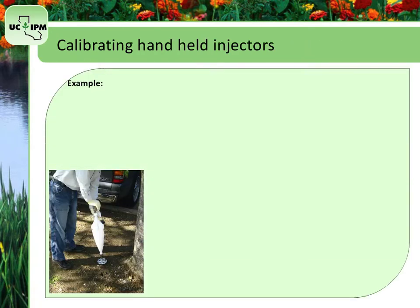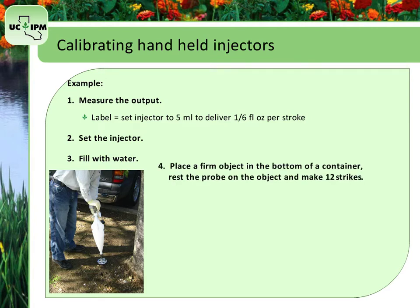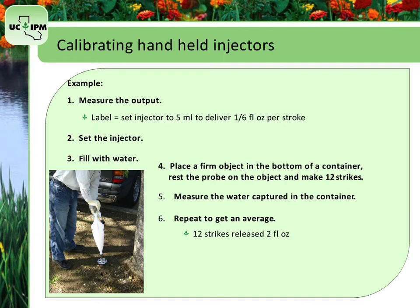To calibrate handheld soil injectors, first measure the output. If the product label says to set the injector to 5 milliliters, the injector delivers 1/6 fluid ounce of solution per application stroke, meaning you need 6 strokes to apply 1 fluid ounce. After setting the injector to the recommended setting, fill it with water. Place a firm object in the bottom of a container, rest the probe on the object, and make 12 strikes. Measure the water captured and repeat a couple more times to get an average. At the 5-milliliter setting, 12 strikes release 2 fluid ounces.